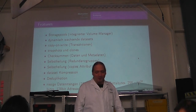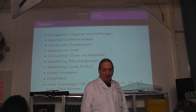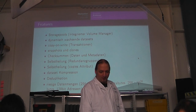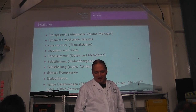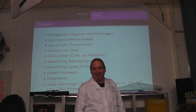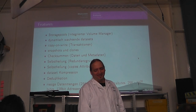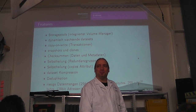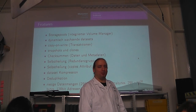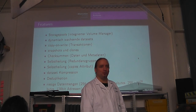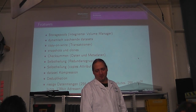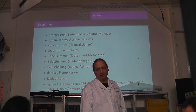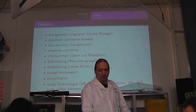ZFS ist halt für riesige Datenmengen ausgelegt. ZFS kann theoretisch mit 256 Quadrillionen Zettabytes umgehen – das ist eine 256 mit 36 Nullen hinten dran. Um das zu erreichen, arbeitet ZFS mit 128-Bit-Pointern. Wer sich jetzt mit C auskennt, der weiß, dass es keine 128-Bit-Datentypen gibt, was das Ganze nicht besonders performant und effizient macht. Es ist halt so, mit 32-Bit macht es keinen Spaß – mit 64-Bit kann man damit arbeiten. Die benutzen halt eigentlich bloß die niederen 64-Bit dieses Pointers. Der Rest wird mit Nullen aufgefüllt. Und wenn dann irgendwann mal die 128-Bit-Wörter da sind, dann kann man wirklich die volle Kapazität ausnutzen und die Pools einfach weiterverwenden.